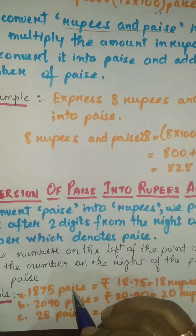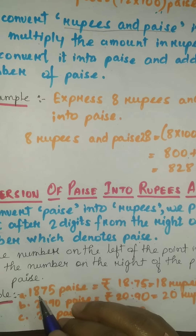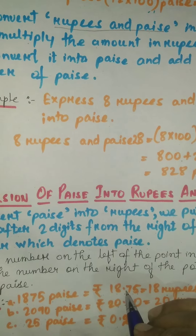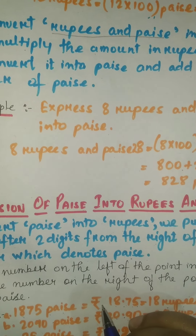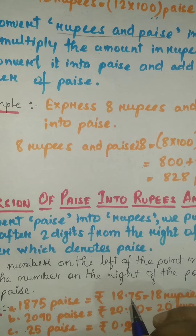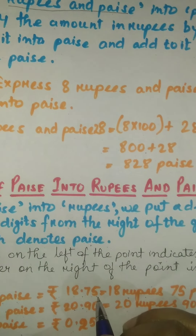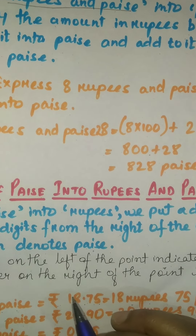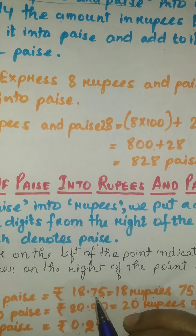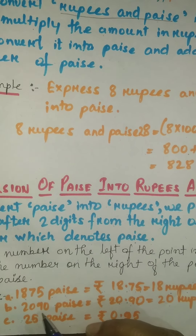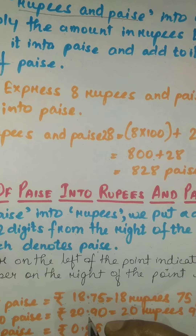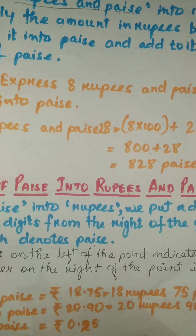For example, 1875 paise: we write the rupees symbol first, then place a decimal point after two digits from the right, so it is written as ₹18.75 — the left-hand side digits are rupees and the right-hand side digits are paise. Another example: 2090 paise is written as ₹20.90, so 20 is rupees and 90 is paise.